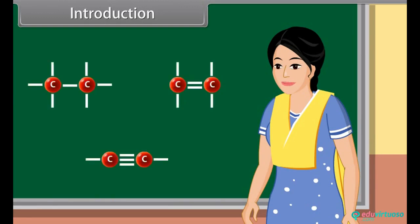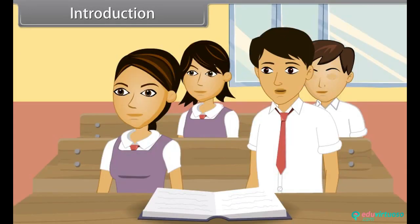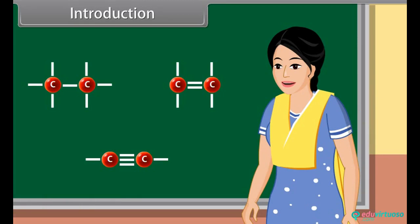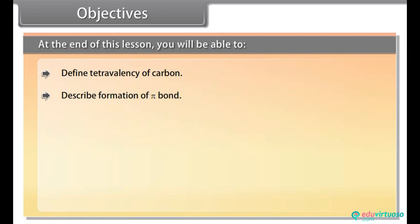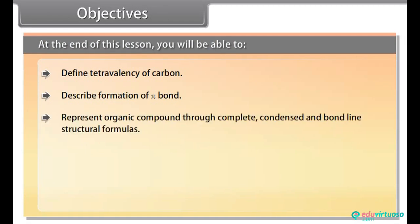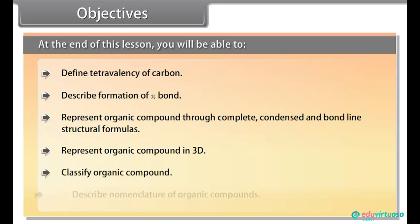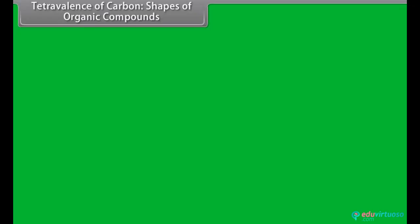The type of bond and the functional group present on the organic compound decides its chemical nature. What is a functional group? It is a group of atoms in an organic compound responsible for the chemical reactions of that compound. In this lesson you will learn organic chemistry and some basic principles. At the end of this lesson you will be able to define tetravalency of carbon, describe formation of pi bonds, and represent organic compounds through complete, condensed, and bond-line structural formulas.